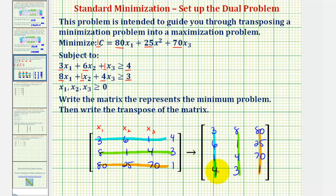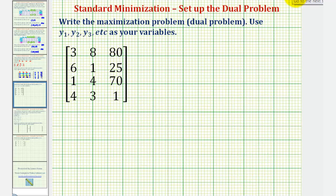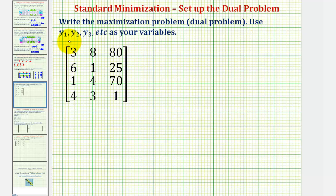This transposed matrix is used to set up the dual problem — the corresponding maximization problem. The first three rows of the transposed matrix will give us our constraints, and the last row will give us our objective function. We'll use the variables y sub one, y sub two, and so on.